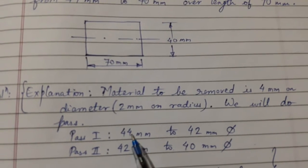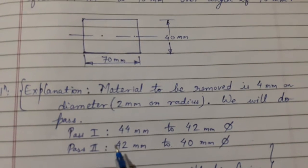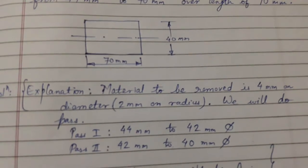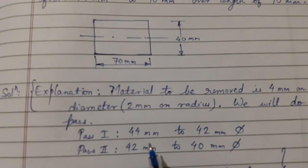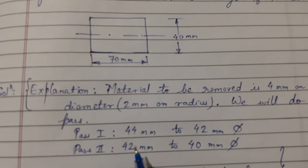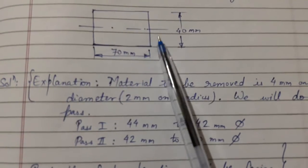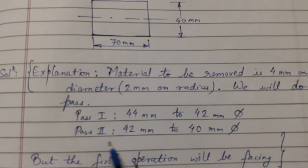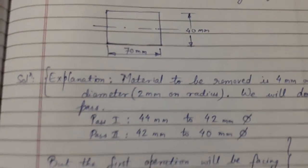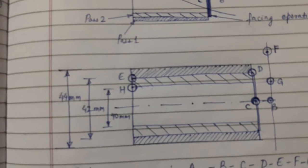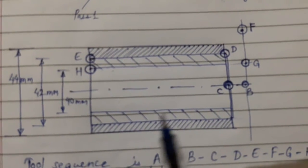In the first pass we will go from diameter 44 to 42 mm, and in the second pass from 42 mm to 40 mm. The first pass can be considered as rough machining and the second as final machining. But first we have to face the component, so the first operation will be facing, then the first pass, and then the second pass.